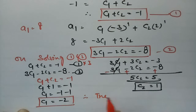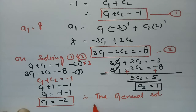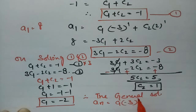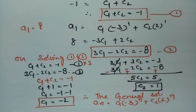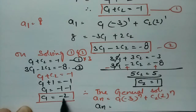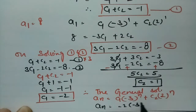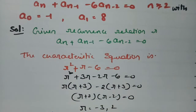Therefore, the general solution is An = C1·(-3)^n + C2·2^n. Substituting C1 = -2 and C2 = 1, the solution is An = -2·(-3)^n + 1·2^n. This is how we solve the problem, and it is quite simple once you understand the method.